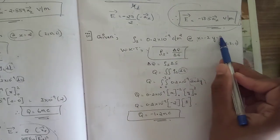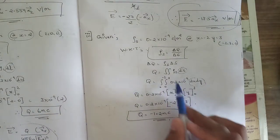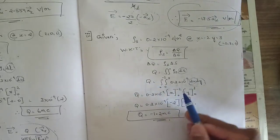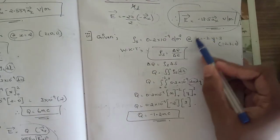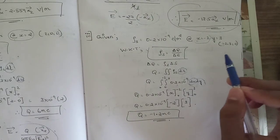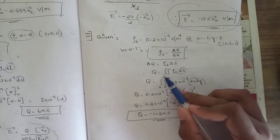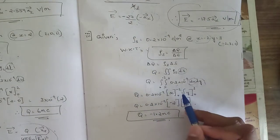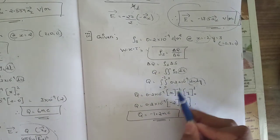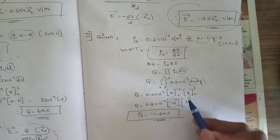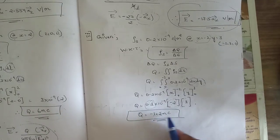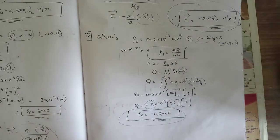Substituting limits: (−2 minus 0) times (3 minus 0) gives −2 times 3 equals −6. So Q equals 0.2 into 10⁻⁹ times −6, giving −1.2 nanocoulombs. This is the charge obtained for the third sub-question. Now we use this charge to calculate the electric field intensity.